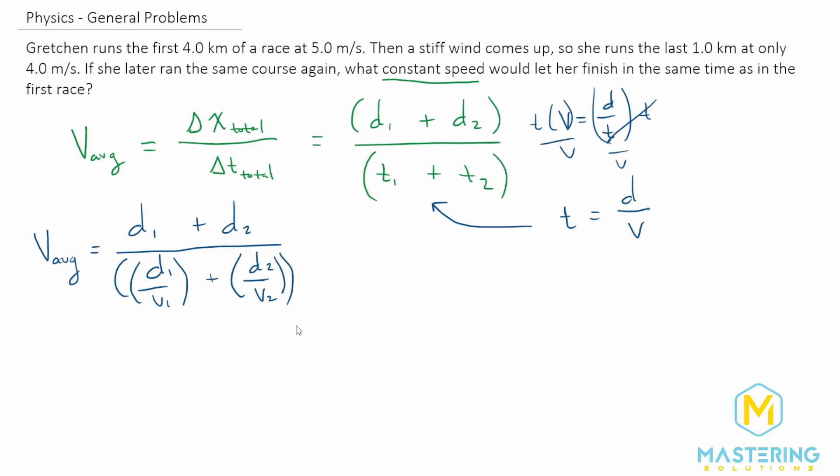So now that we have our final equation, all that's left to do is to plug in the values to find the average velocity that she needs to run to end up with the same time that she did in the first race. So v average is equal to 4 times 10 to the 3 meters. That comes from 4 kilometers, and we can replace kilo with 10 to the third.